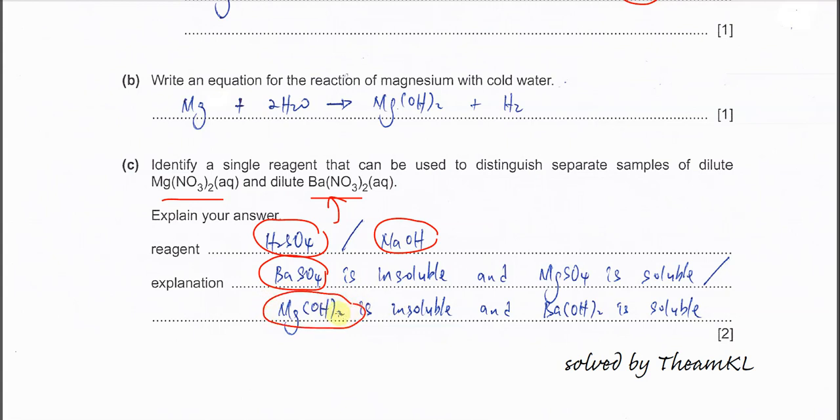When you add sodium hydroxide then magnesium hydroxide will form. Barium sulfate is insoluble. Magnesium hydroxide is also insoluble. Magnesium sulfate is soluble.